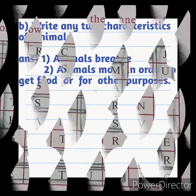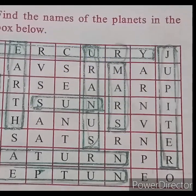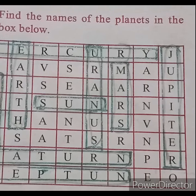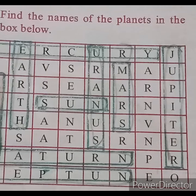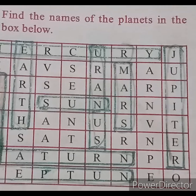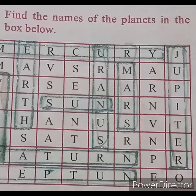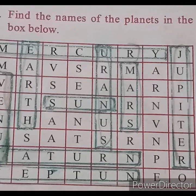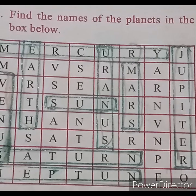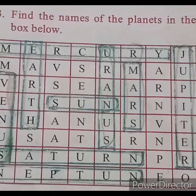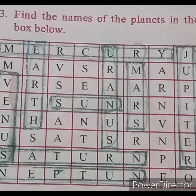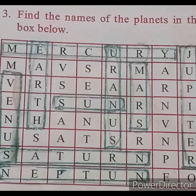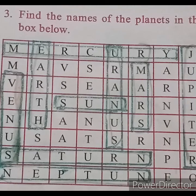Question No. 3: Find the names of planets in the box given below. First, Mercury. Second, Venus. Third, Earth. Fourth, Mars. Fifth, Saturn. Sixth, Neptune. Seventh, Uranus. Jupiter.